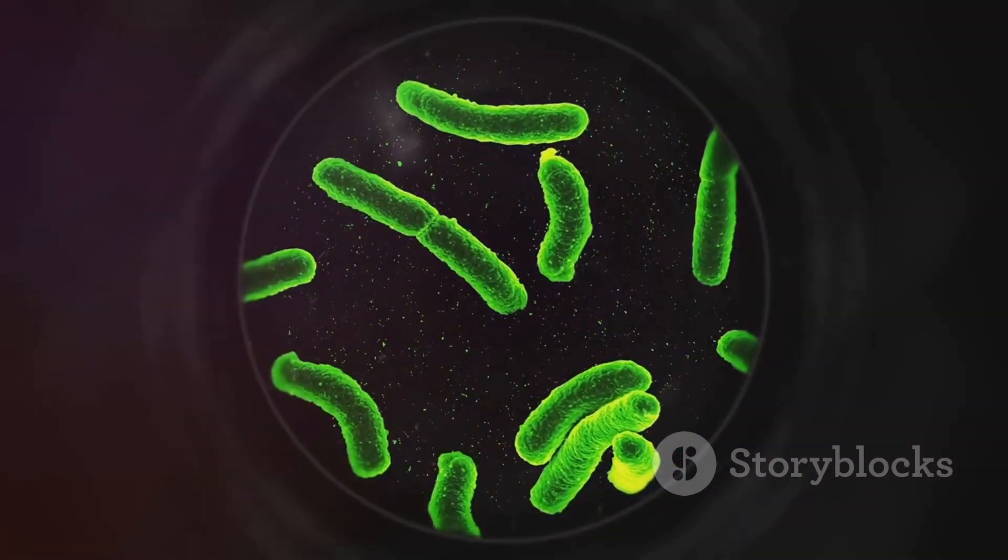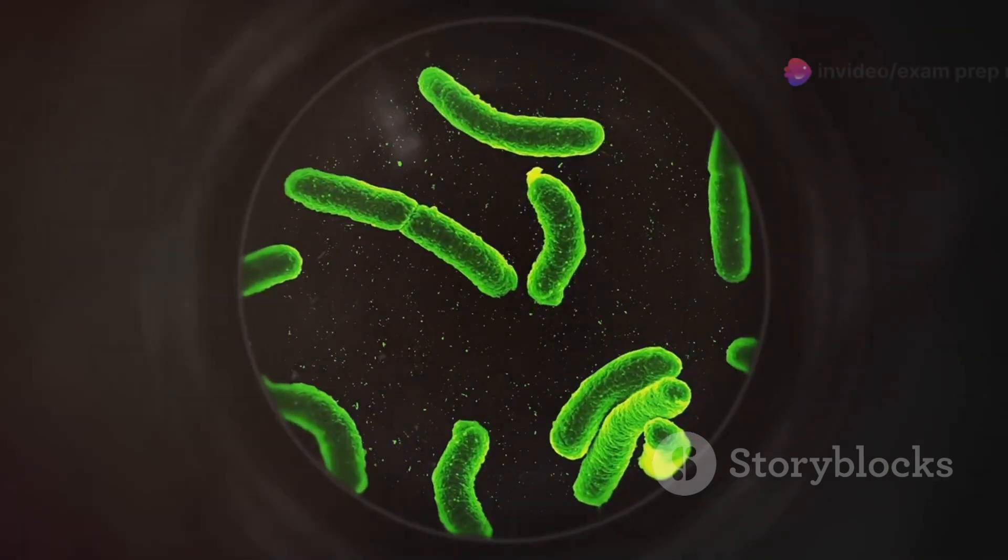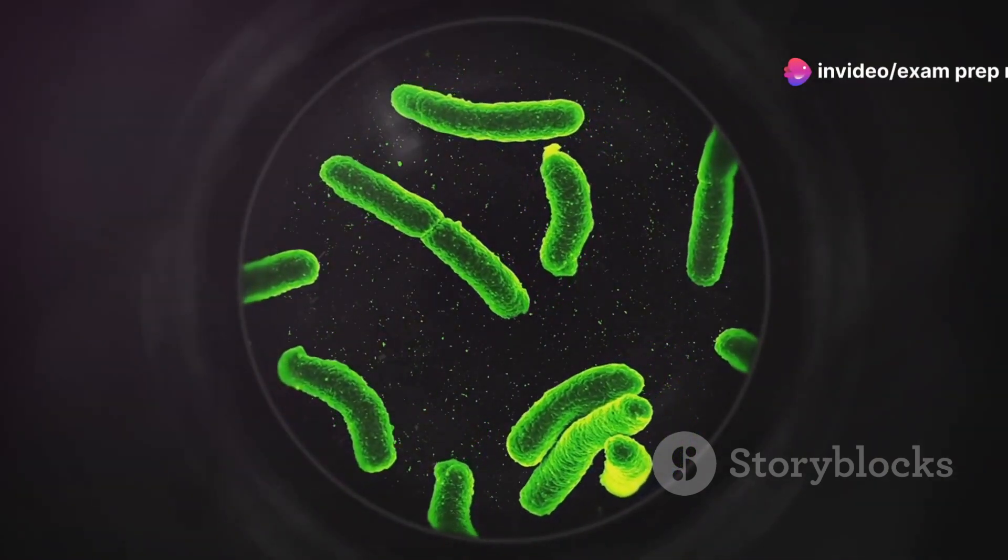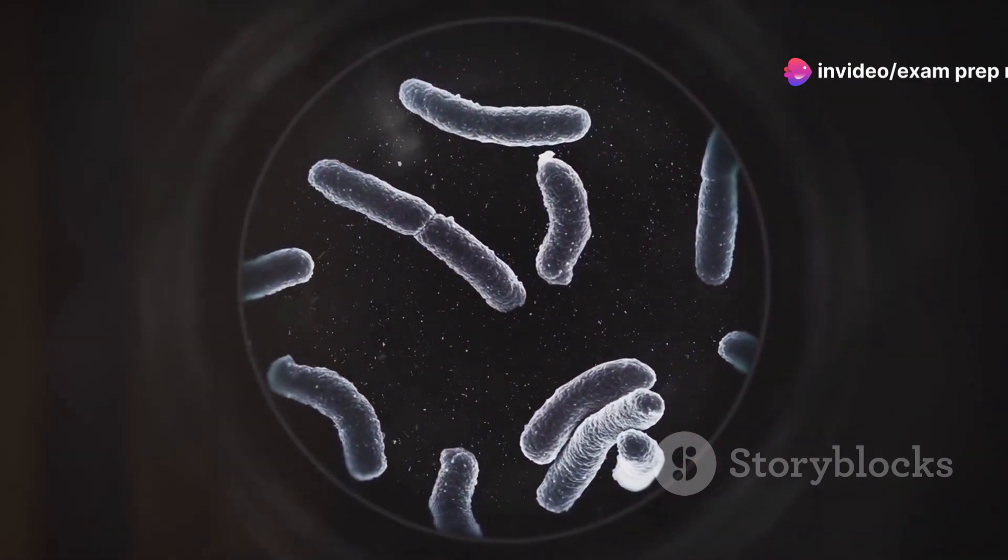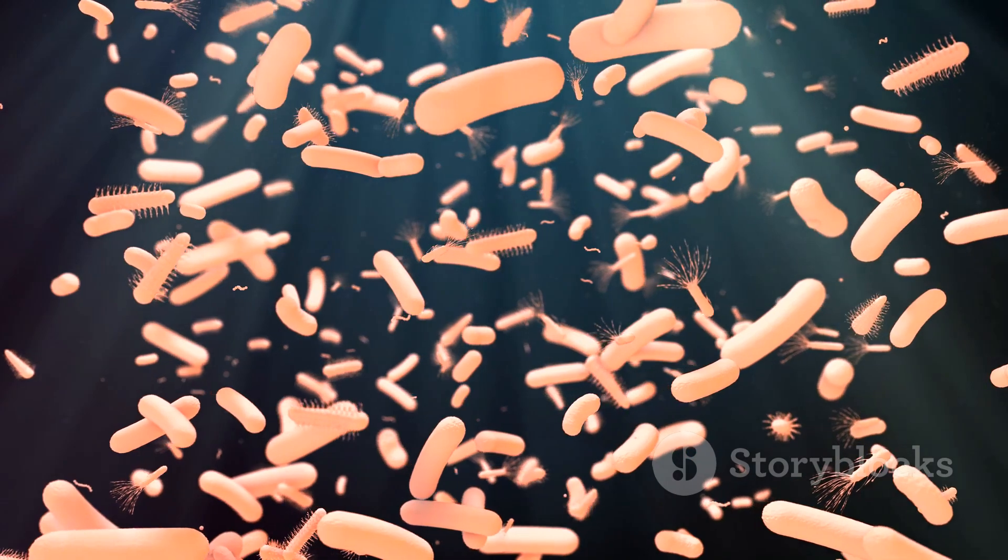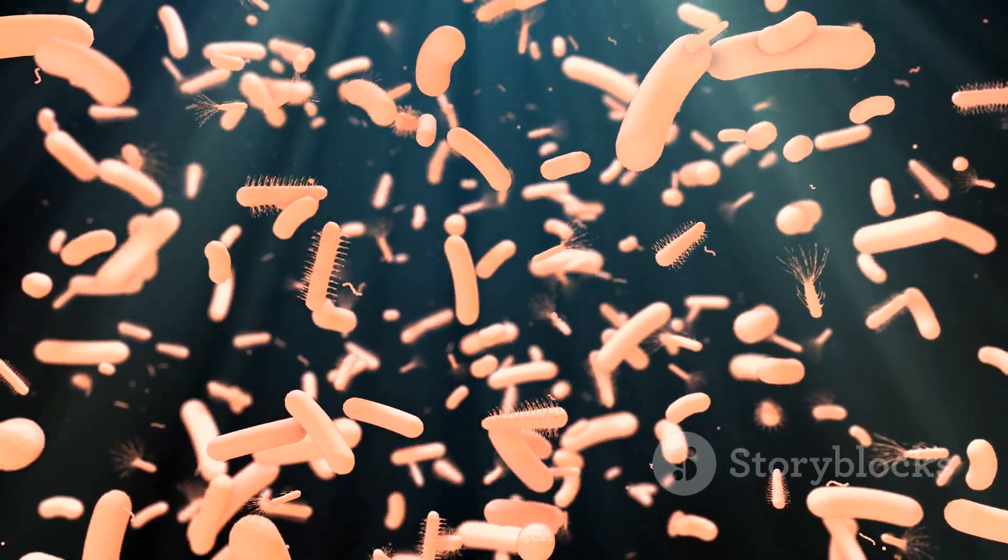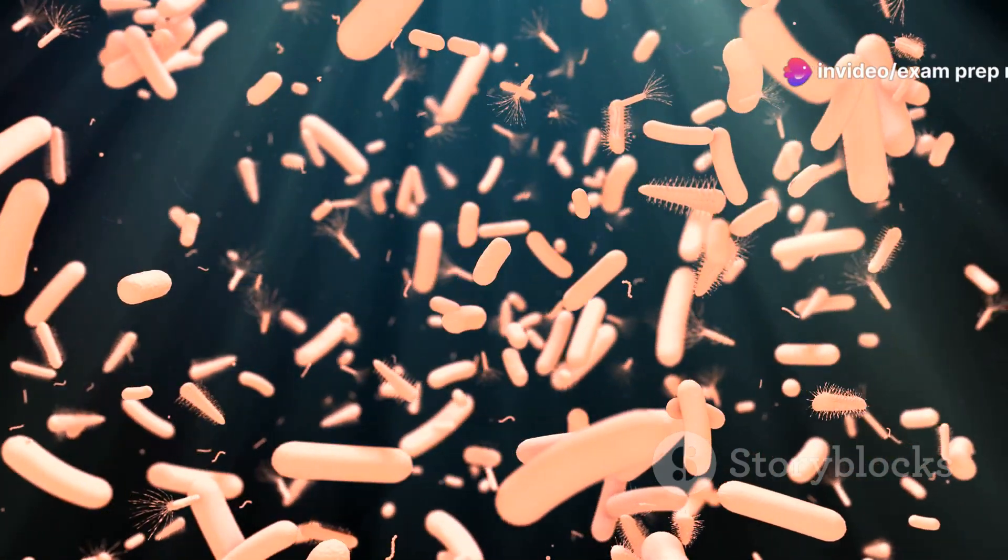Some cocci even form chains like streptococcus, the culprit behind strep throat. Next, we have the rod-shaped bacilli, pronounced bacilli. These bacteria resemble tiny pills or rods and are incredibly diverse. Some bacilli are responsible for causing diseases like tuberculosis, while others help us digest food and boost our immune systems.